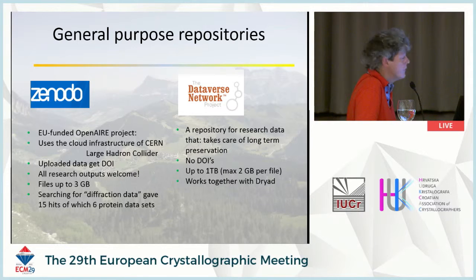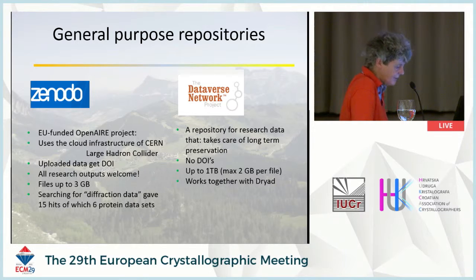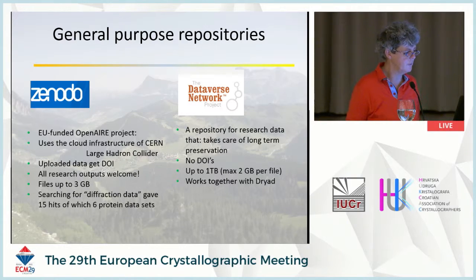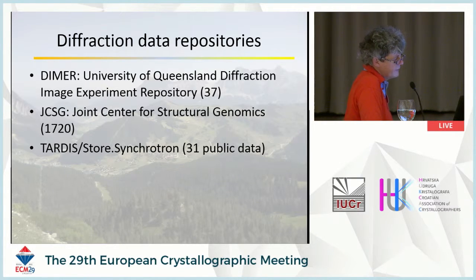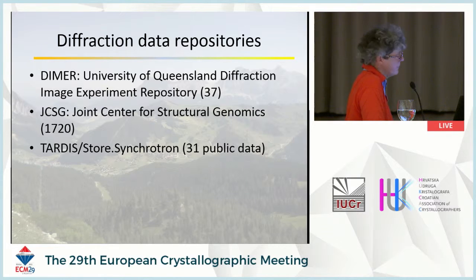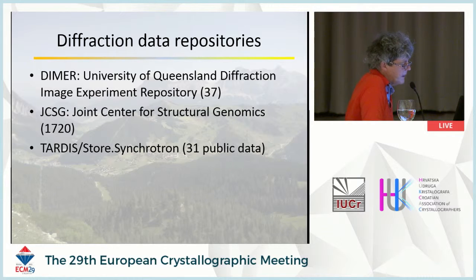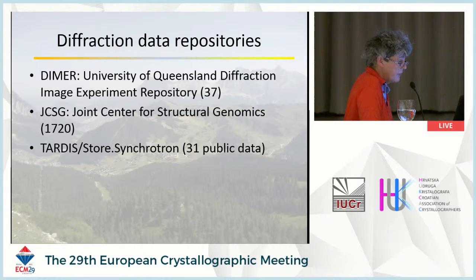There's also Dataverse, used by many university libraries — it doesn't have DOIs and in some places like Holland you are limited to only about 2 megabytes. For diffraction-specific repositories, the University of Queensland diffraction image experiment repository contains 37 datasets; the Joint Center for Structural Genomics has stored many; and TARDIS stores all synchrotron data, which can be made public after a period on the scientists' request.